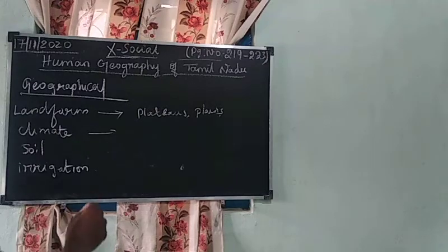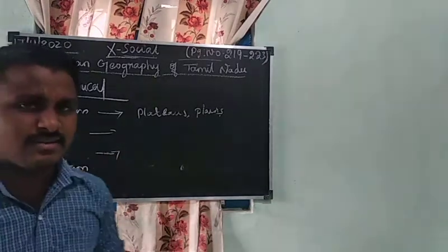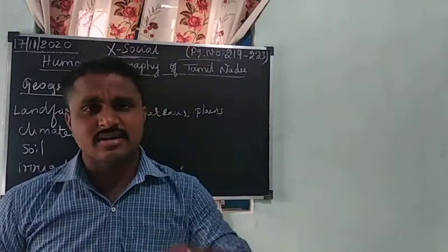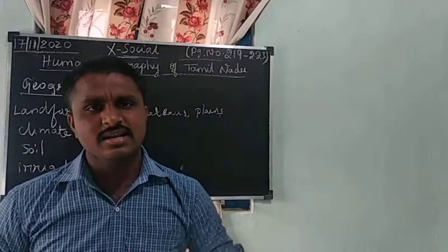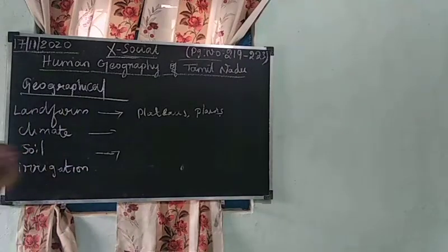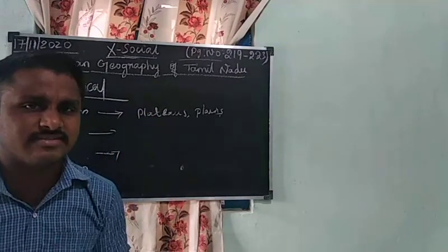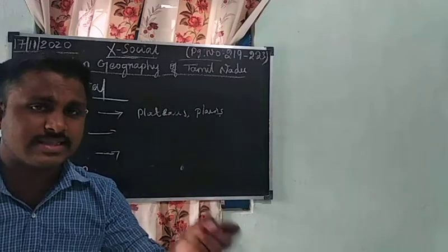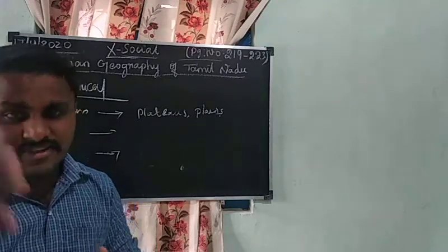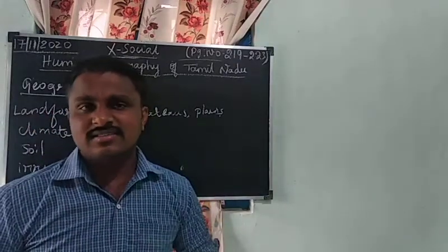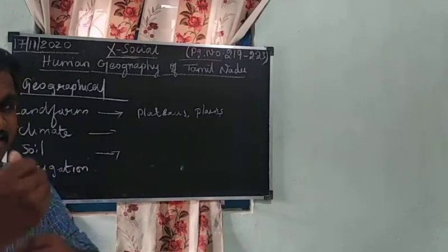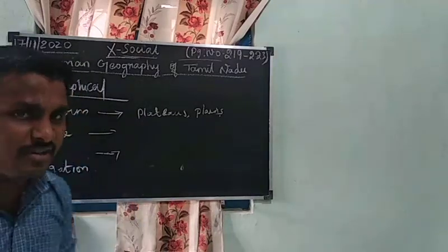Next is soil. There are different types of soil: black soil, laterite soil, alluvial soil, and mountain soil. Black soil is suitable for cultivating cotton. Alluvial soil is suitable for cultivating paddy and wheat. Laterite soil is suitable for millet. Based on soil types, we cultivate different crops.